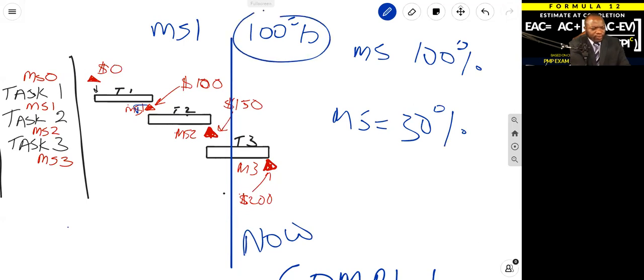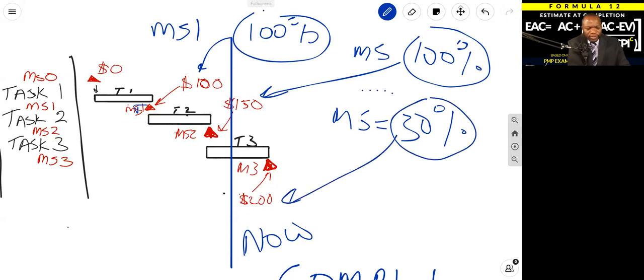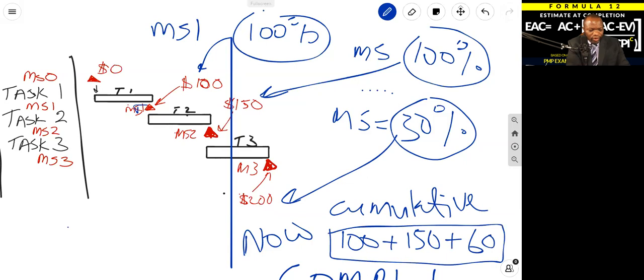Well, you need to multiply 100% of 100 is 100, 100% of 150 for milestone two is 150, 30% of 200 is 60. So you would have, at time now, cumulative, right? Cumulative earned value would be $100 plus $150 plus $60. That would be your earned value right now. And that would be earned value is $310.